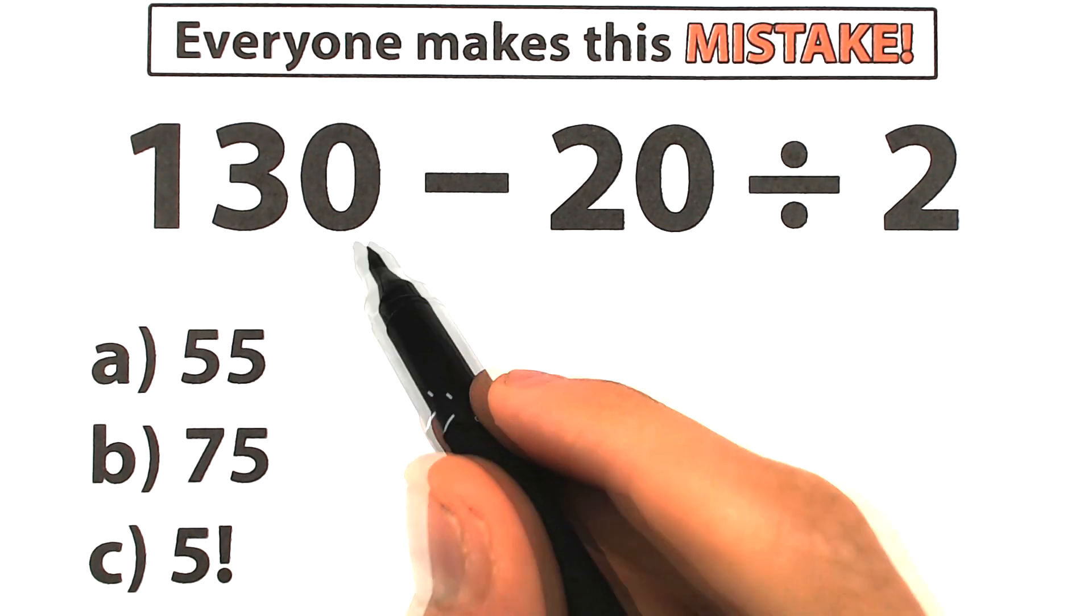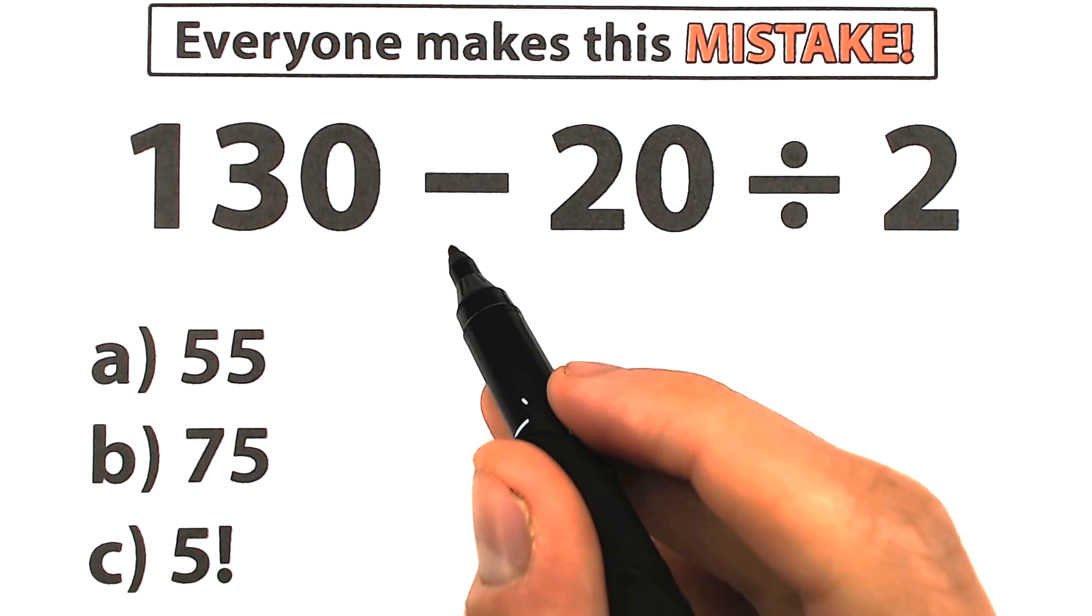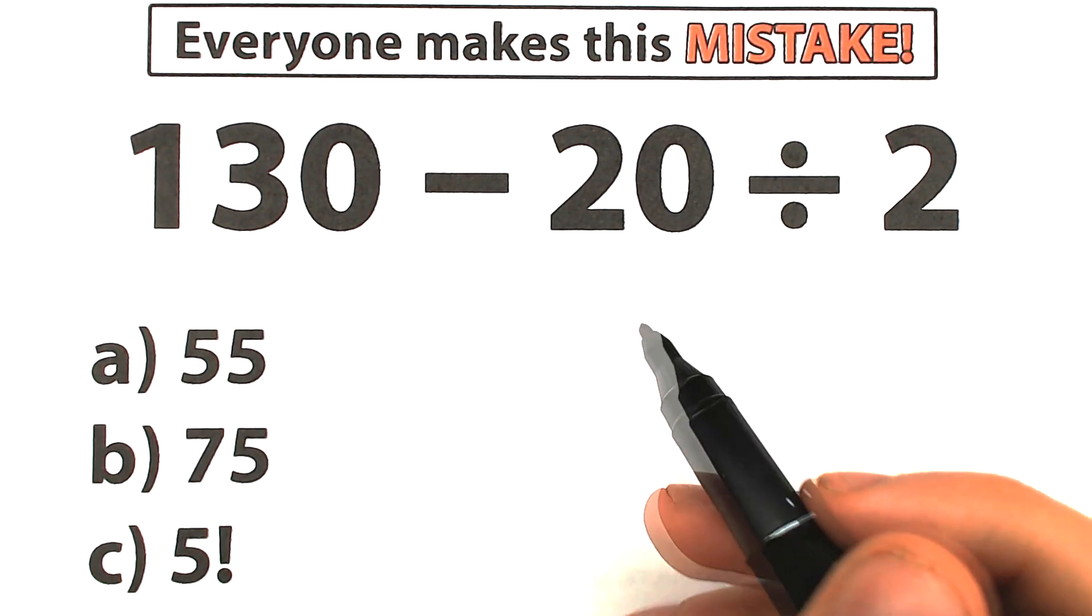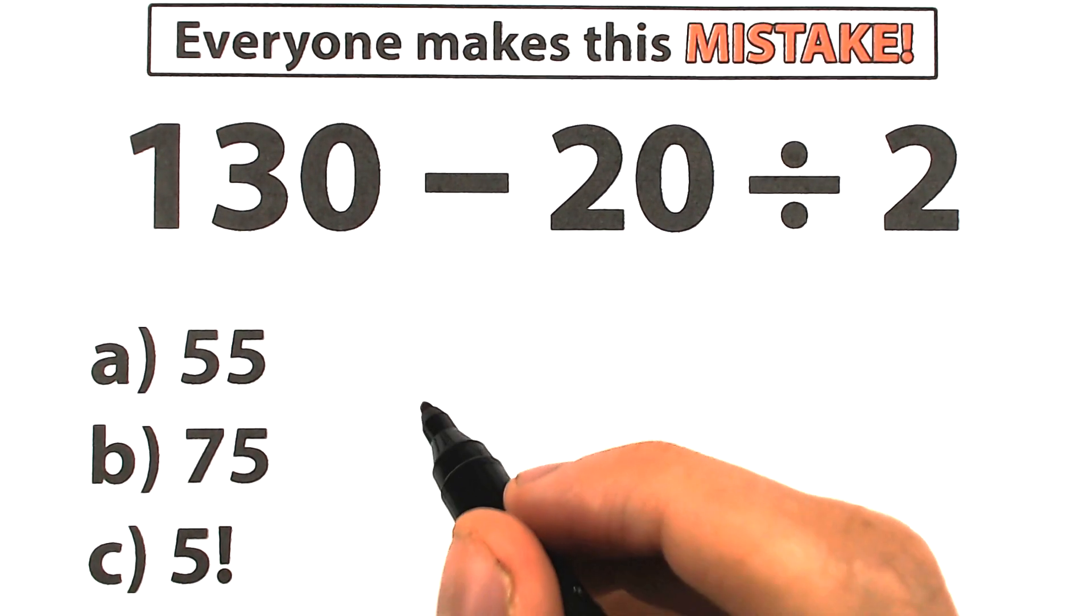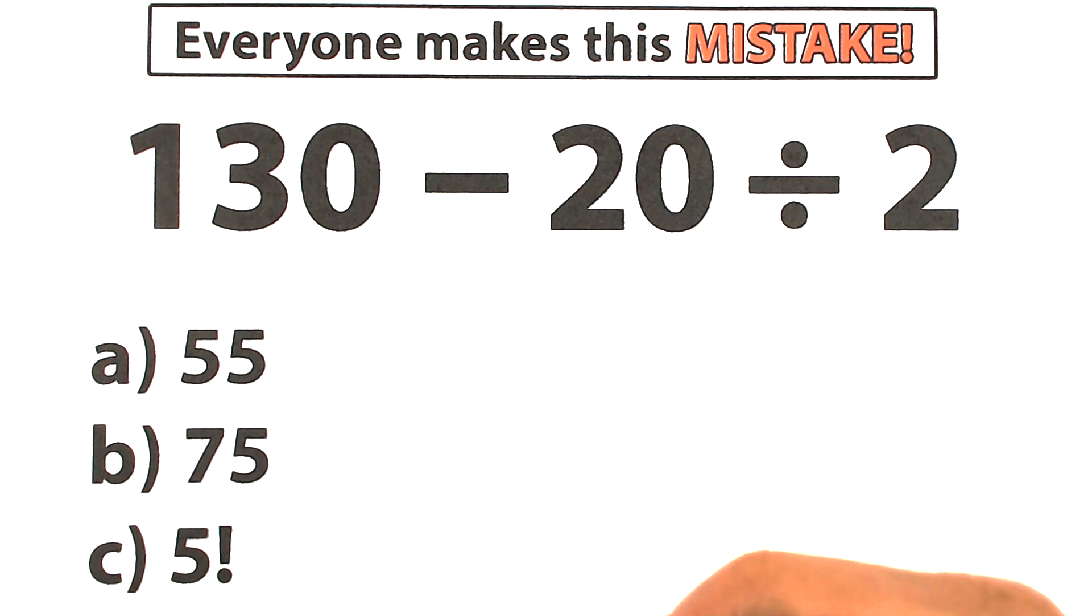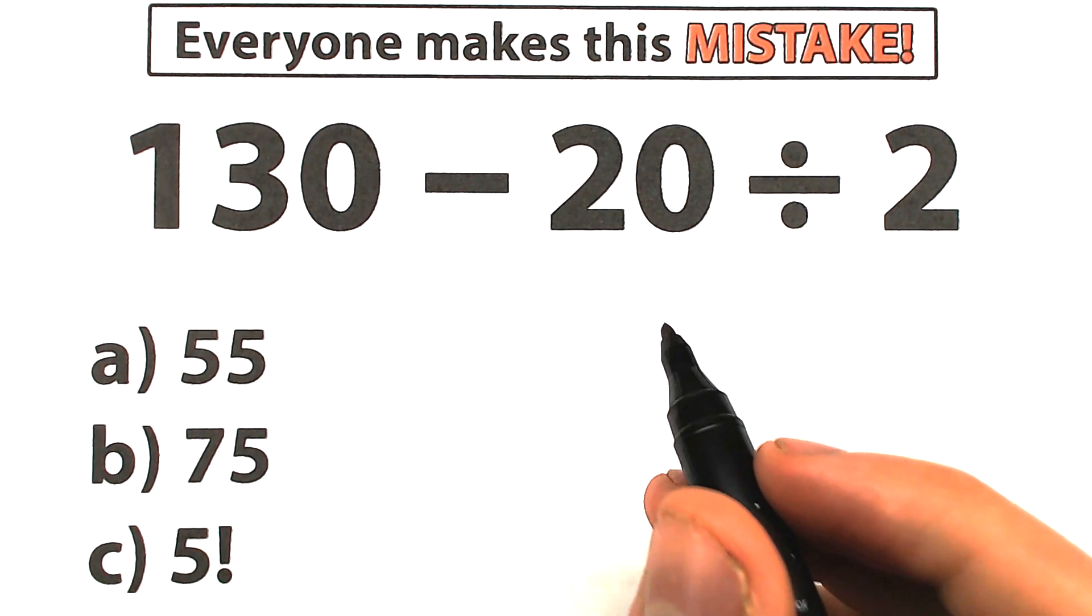Well, let me go ahead and tell you the problem we have. We have 130 minus 20 divided by 2. Seems pretty basic, seems pretty easy, we have very simple subtraction, we have division, so everyone learned this stuff in the third grade. So go ahead and put your answer into the comment section. We have three options, choose one option, what do you think is correct, and write your option down into the comment section. It will be really interesting to check your answers.